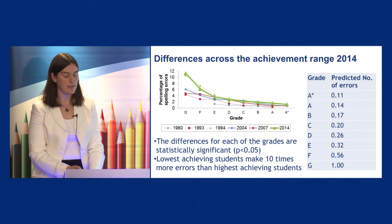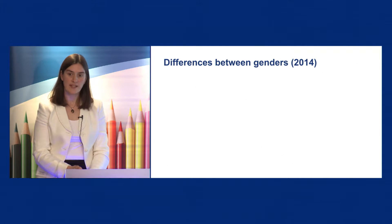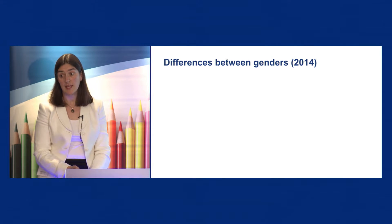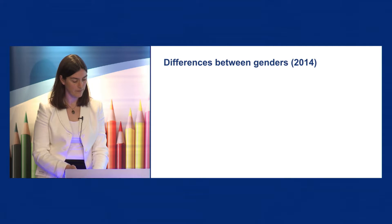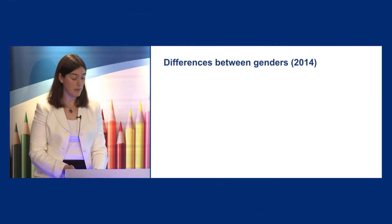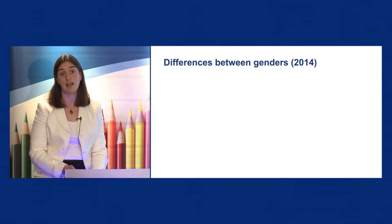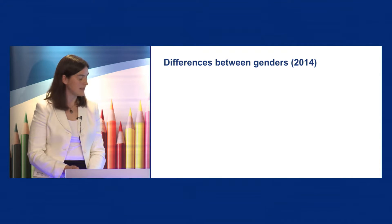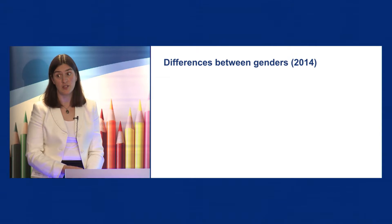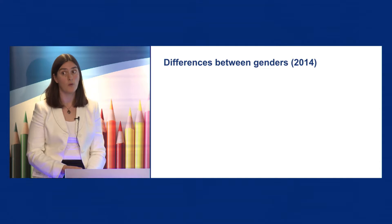We've also looked at the difference between genders. Again using the 2014 data, we found that female students appeared to make fewer errors than male students did. We investigated the differences using a negative binomial regression and found that the difference between genders was statistically significant. We were able to use the results to predict the number of errors a female student would make for every single error made by a male student. As shown in this table, for every five errors made by a male student, a female student would only be expected to have four errors.